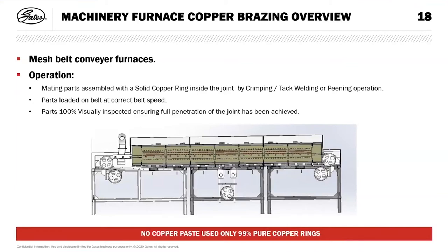We have two mesh belt conveyor furnaces. This is a cheaper process than TIG welding but more expensive than forming. Here we use a solid copper ring and it goes through the burners at 1,100 degrees in a protective atmosphere, so the parts come out clean. Parts are 100% visually inspected. We never use copper paste — we only use 99% pure copper rings. The limiting factor of the mesh belt conveyor furnace is the tube length; we would not approve going over one and a half metres, otherwise they tend to come out looking like a banana rather than a straight tube.